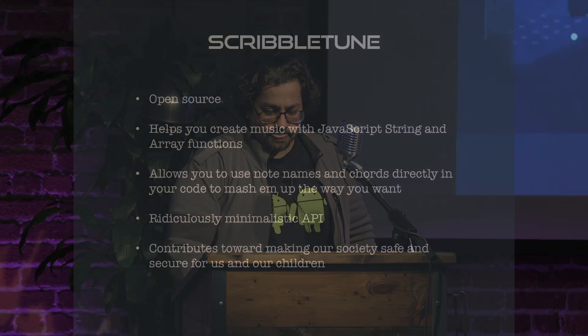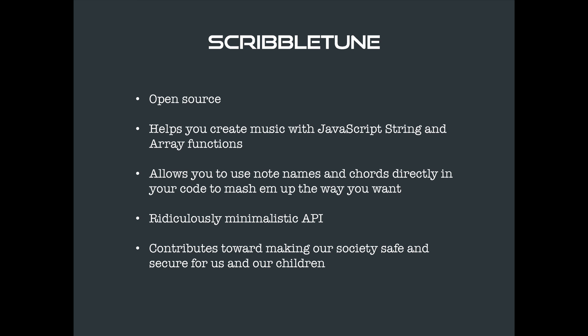I like music and I like JavaScript and I try to find ways to put them together, which is what I did with ScribbleTune. ScribbleTune is open source, it is on GitHub — and we are inside GitHub, so that's a double whammy. It helps you create music with JavaScript strings and array functions, a lot of which you already know. You can use note names, chord names, and scale names directly in your code. You can import Lodash or underscore, use all of that to mangle your arrays and build complex structures.